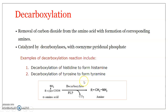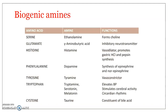For example, the decarboxylation of histidine to histamine requires the enzyme histidine decarboxylase. Decarboxylation of glutamic acid is catalyzed by glutamate decarboxylase. All these enzymes are very specific to their amino acids. Serine gives rise to ethanolamine on decarboxylation, which is used for forming choline — as you may recall from our study of lipids.